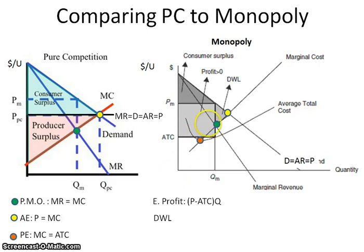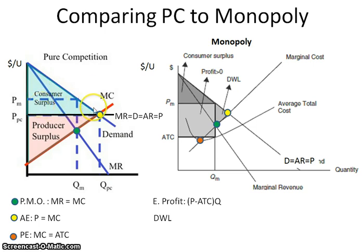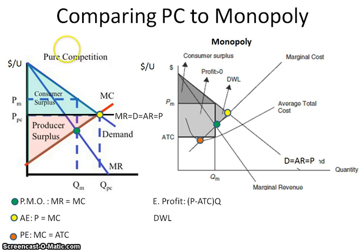When we're looking at consumer surplus: if you're looking at this graph with the perfectly competitive firm, it is going to be this whole big blue area. If we're talking about the monopoly, consumer surplus is below the demand curve and above the monopoly price — it's obviously much smaller than what you would have for the perfectly competitive. So that's one of the major takeaways: consumer surplus is far less for the monopoly because you have a different, higher price.